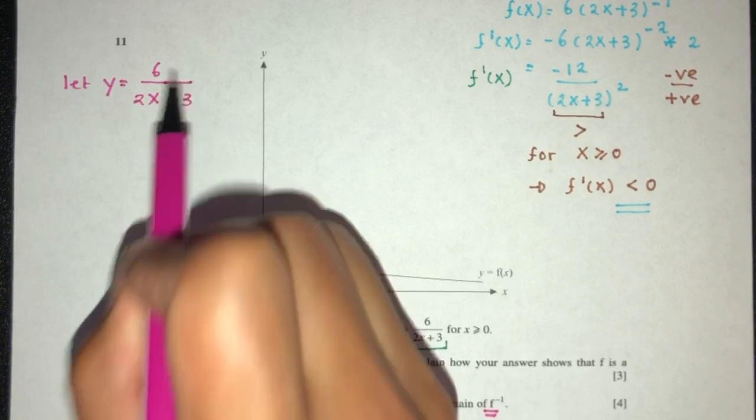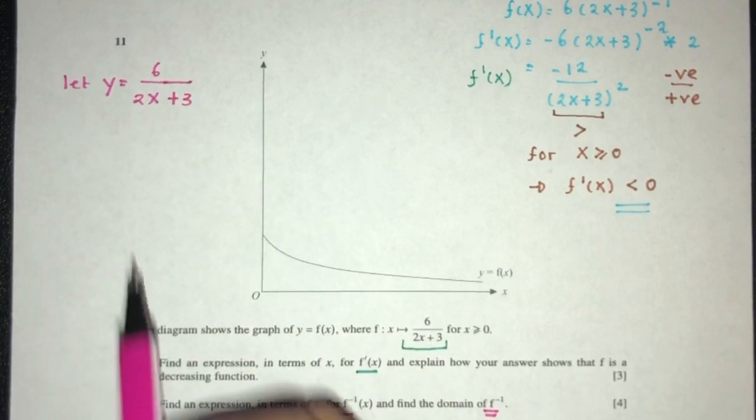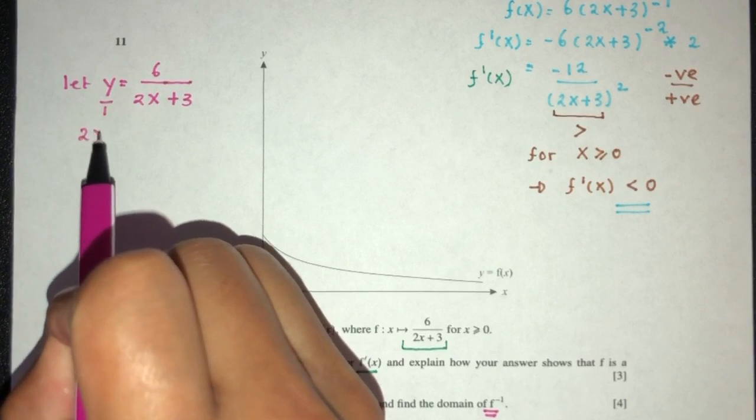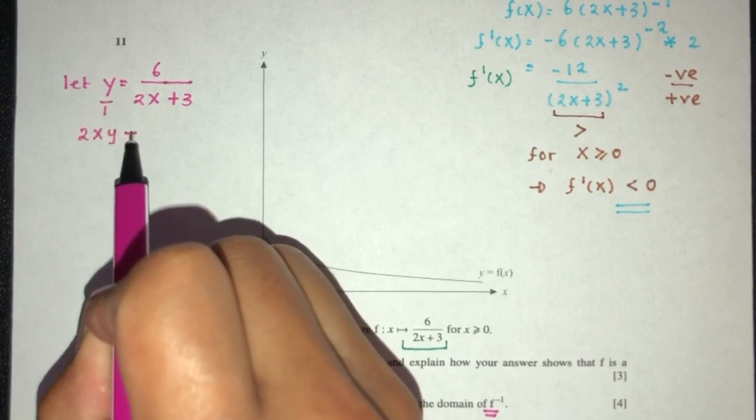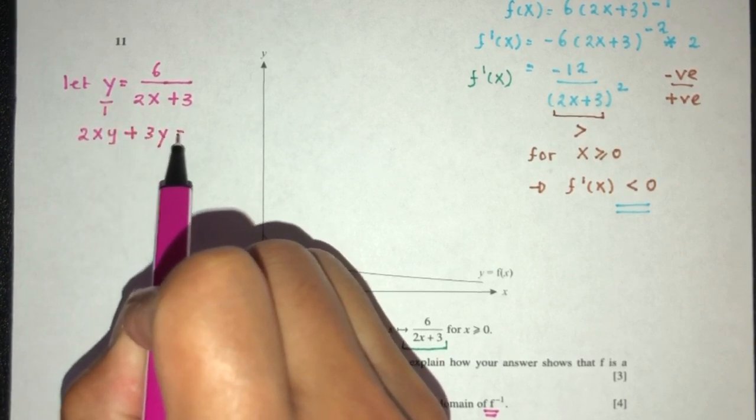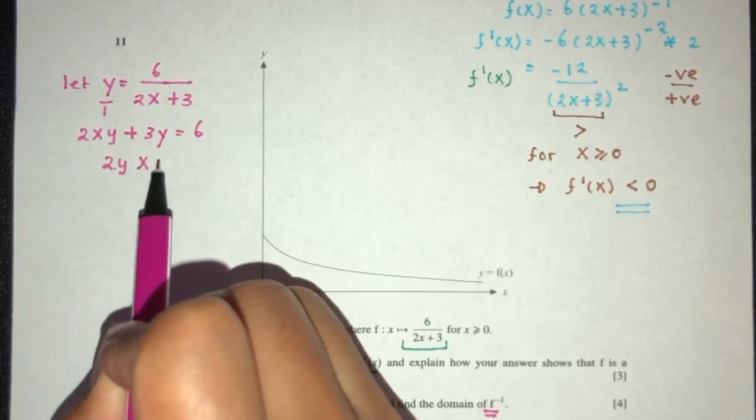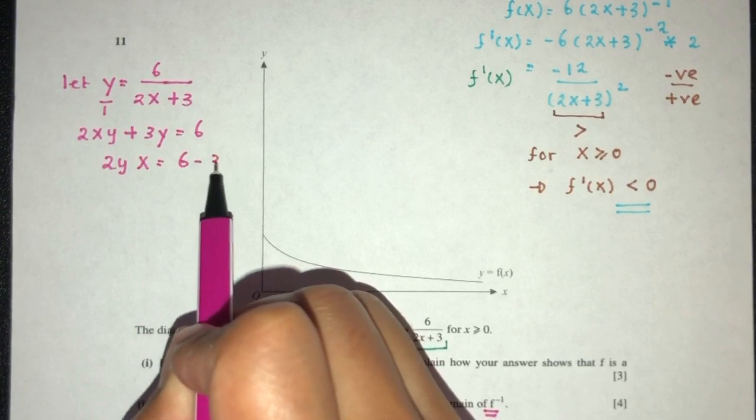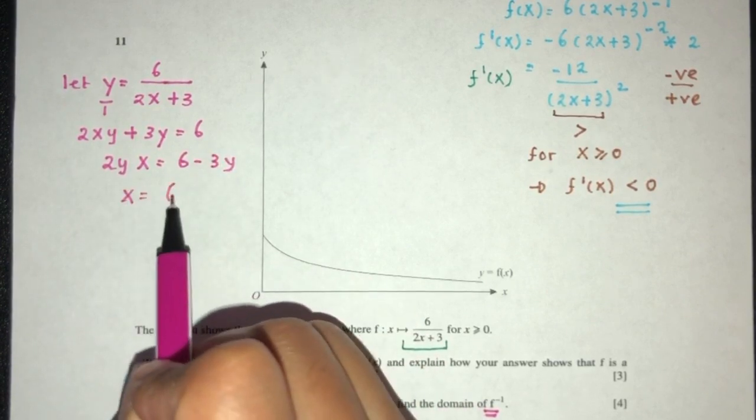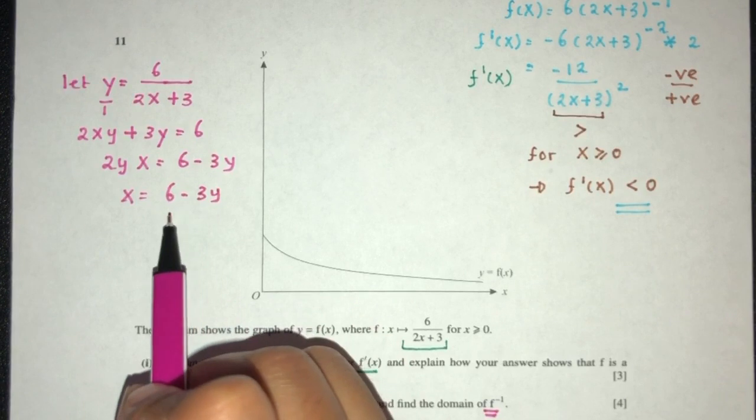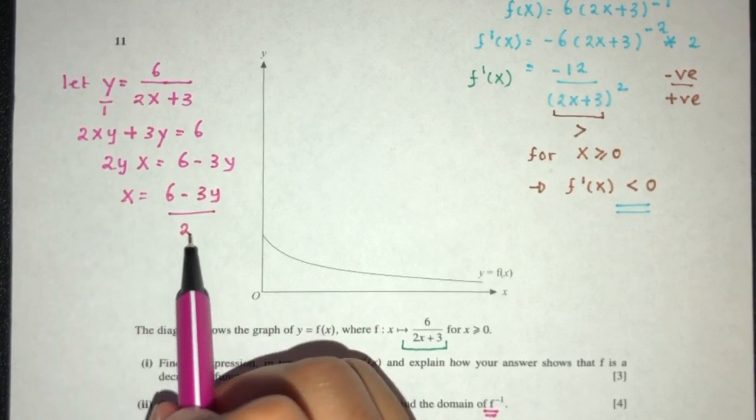Next step, we will make x the subject. First, cross multiply: you will have 2xy plus 3y equals 6. Then 2yx equals 6 minus 3y, and x equals (6 minus 3y) divided by 2y.